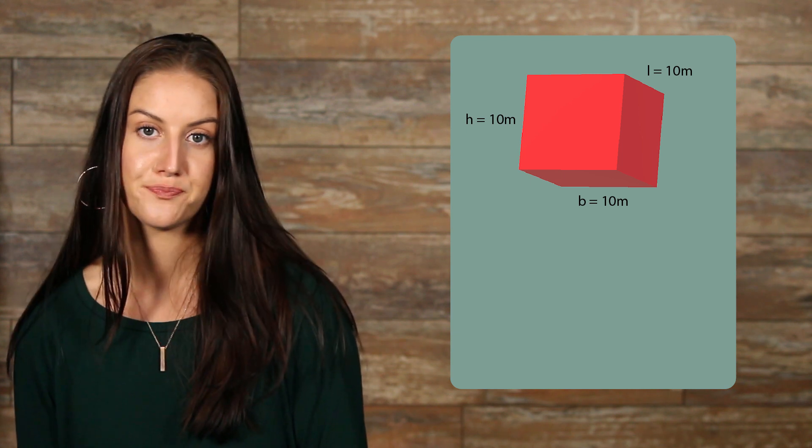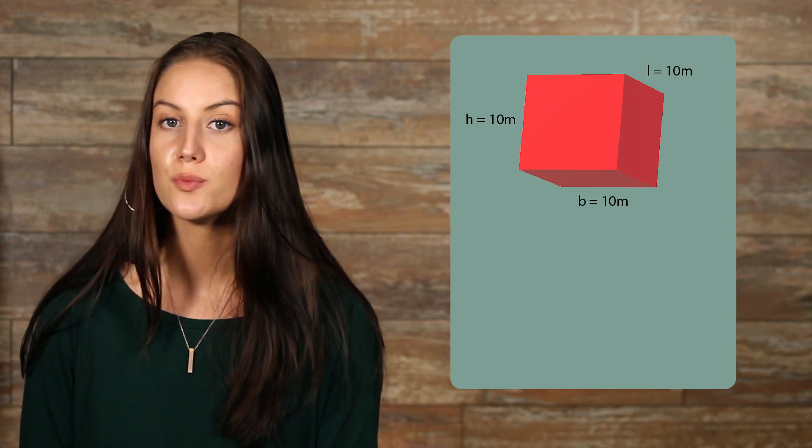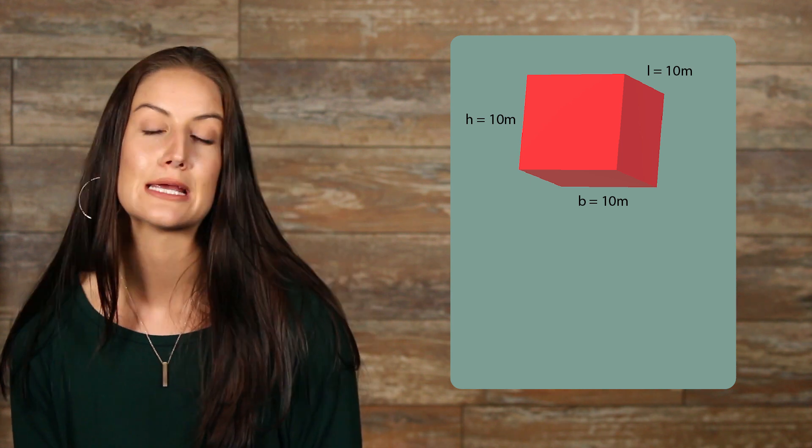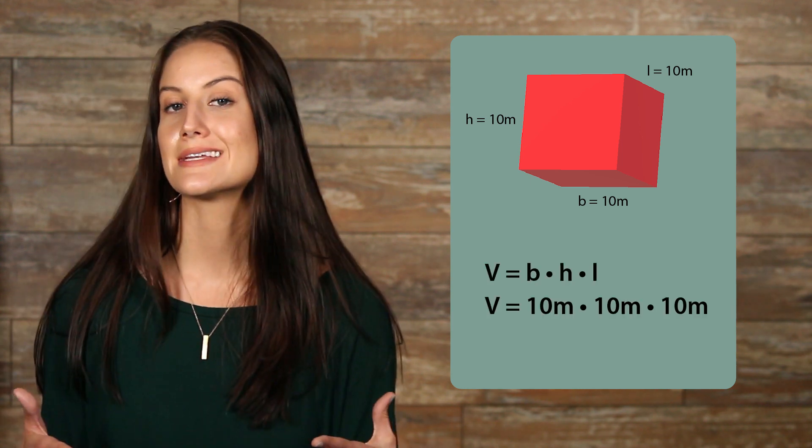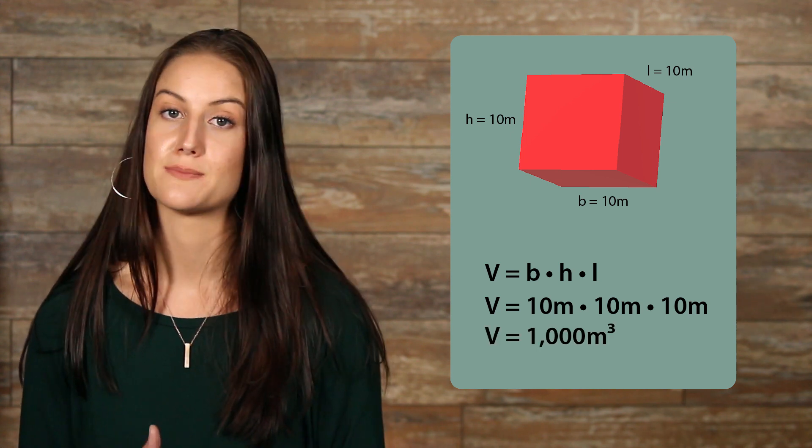Here's an example. Here we have a cube, which is a rectangular prism, but all the sides are perfect squares. Because it's a cube, we know that all of the sides are the same distance, so all we need to do is multiply 10 times itself three times. This gives us 1000 meters cubed.